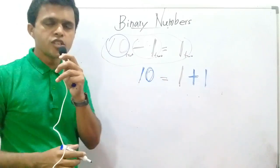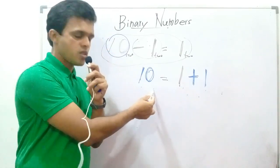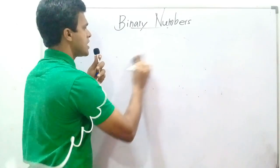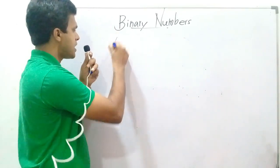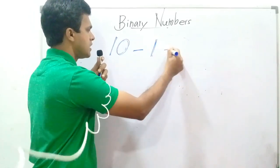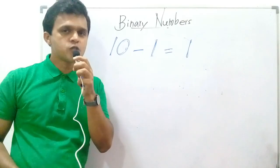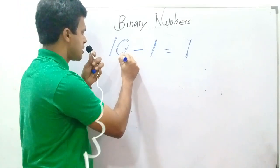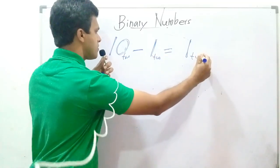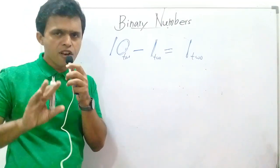In the previous segment, you learned the relation: 1 plus 1 equals 10. On the other hand, we can write that 10 minus 1 equals 1. The base is 2 here, here, and here. Bear in mind these relations in order to do these sums very easily.